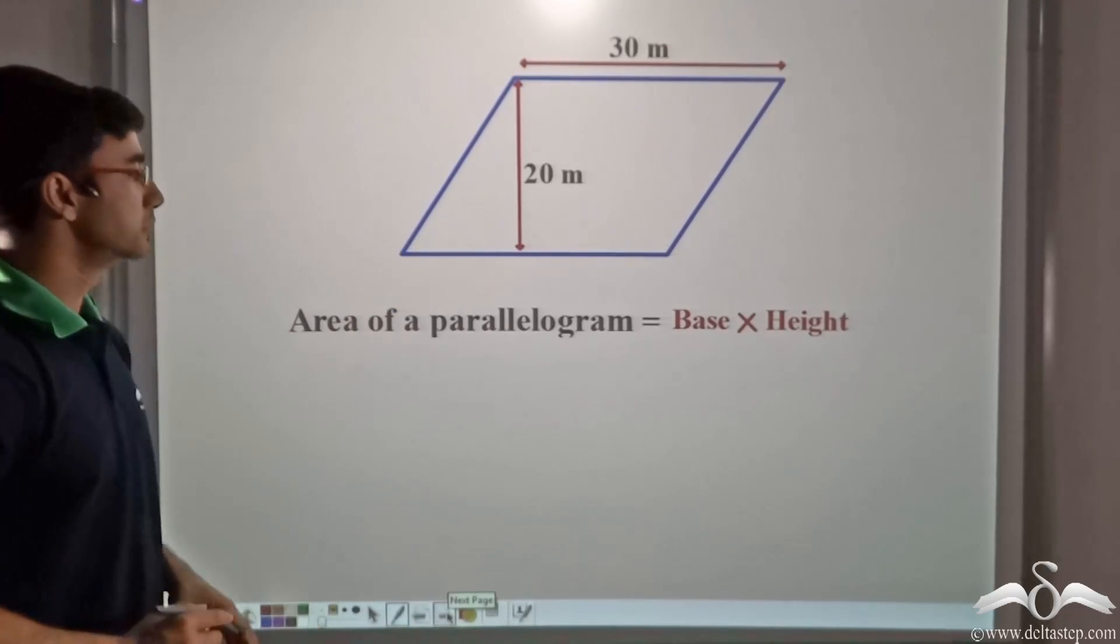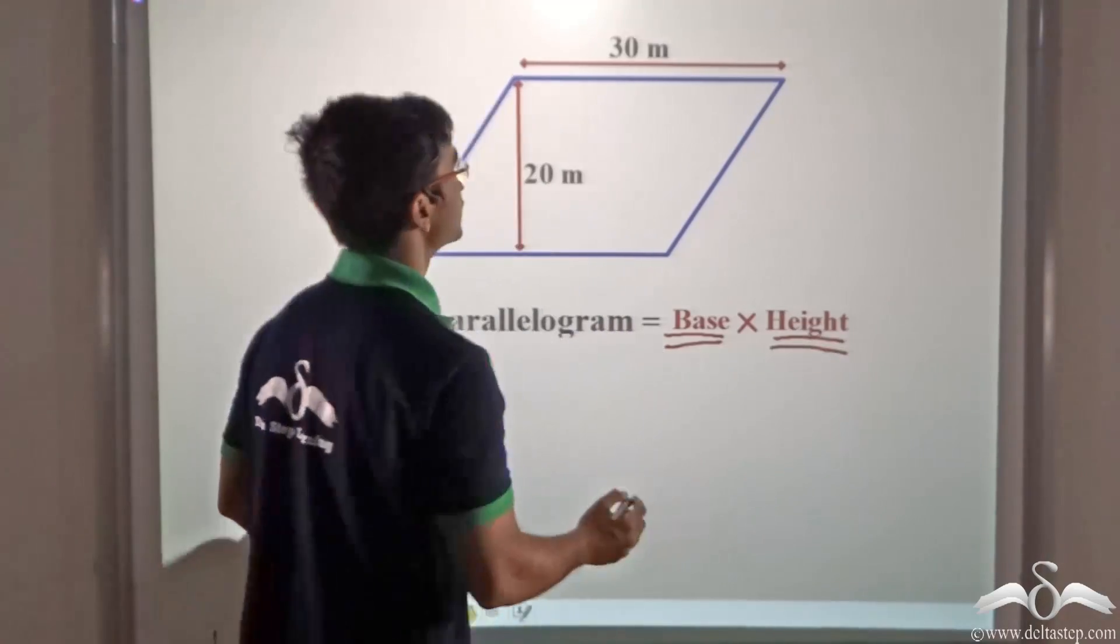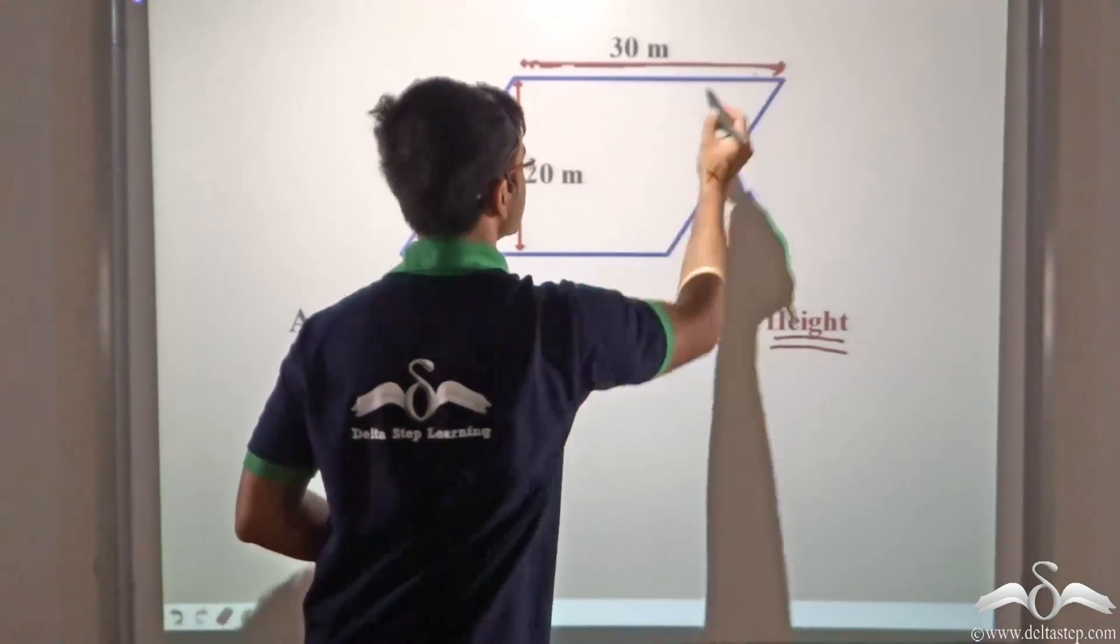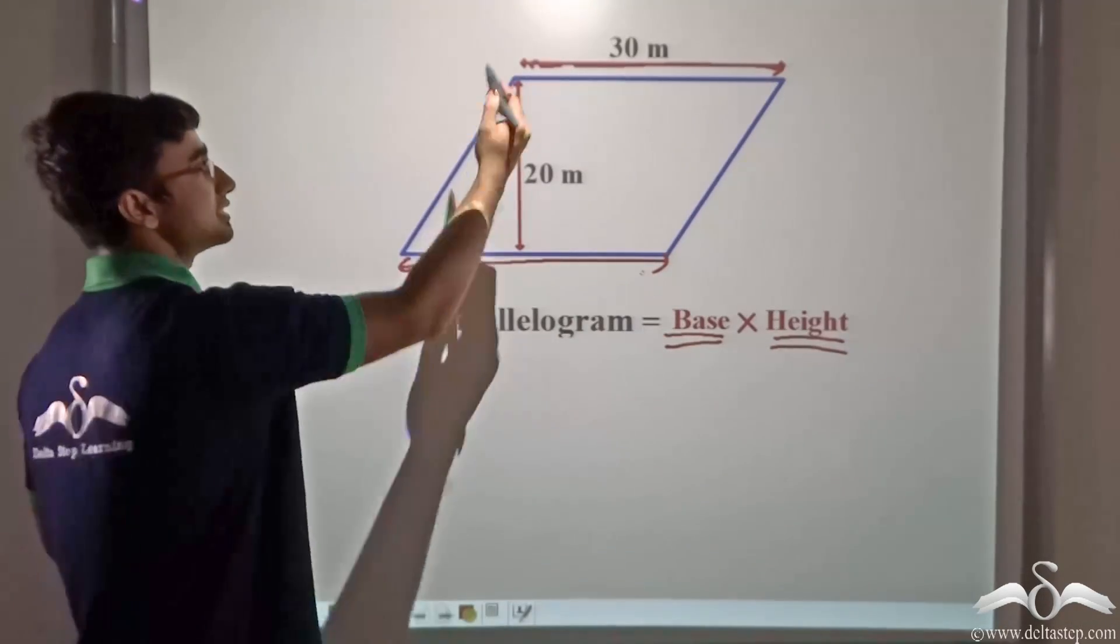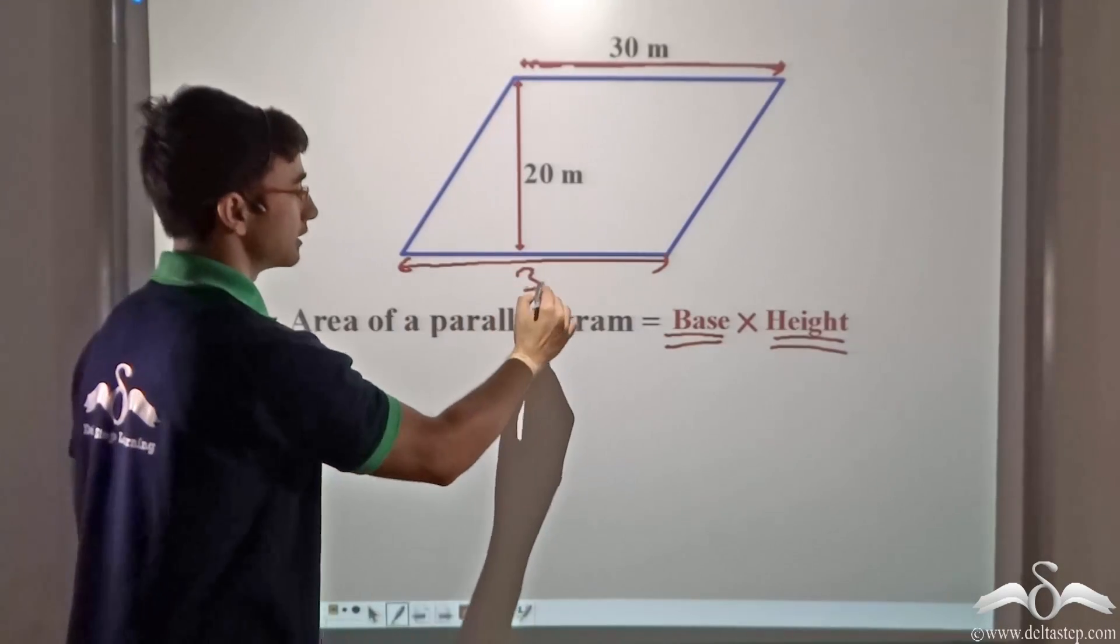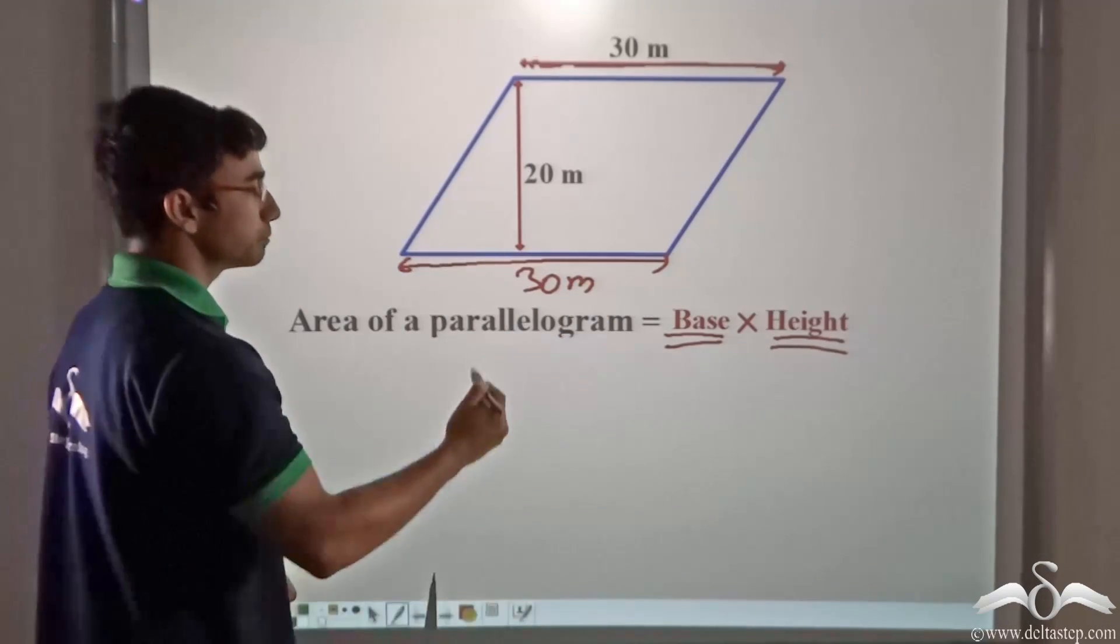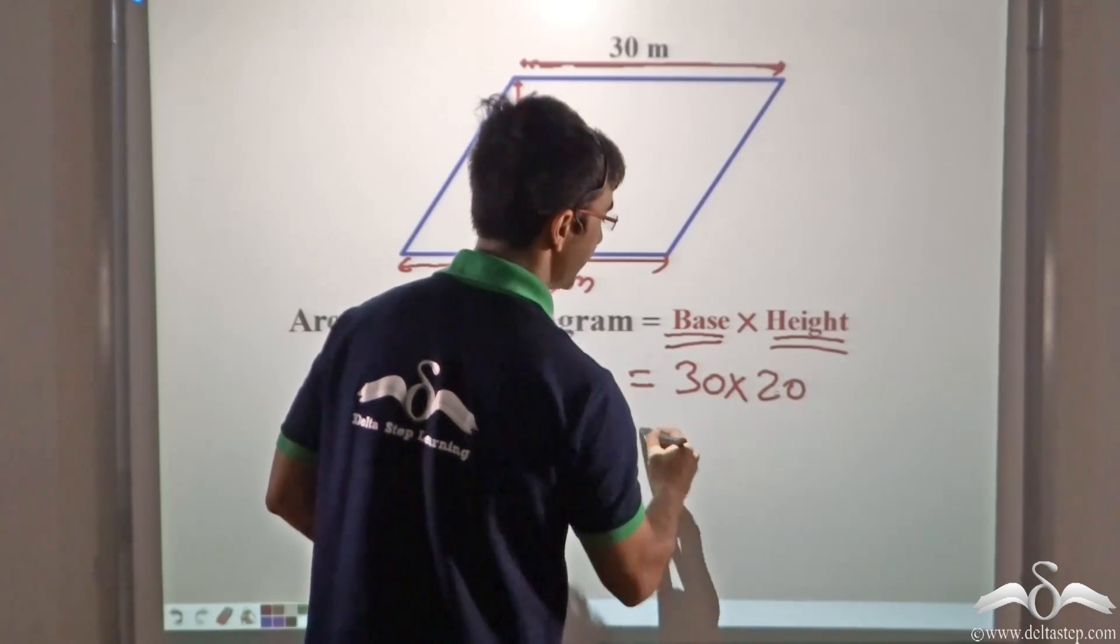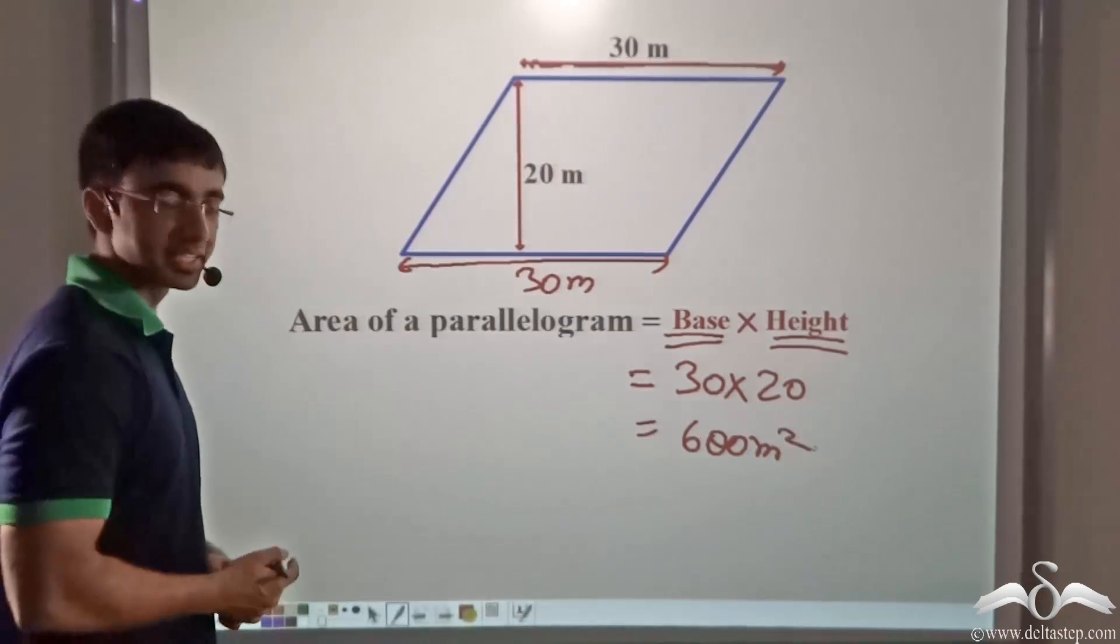I will be able to write the area of the parallelogram as base into height. Now we have studied that this particular side is known as the base of parallelogram and since opposite sides are equal, this side is also equal to 30 meters. So the area of the parallelogram will be nothing but 30 into 20 equal to 600 meters square.